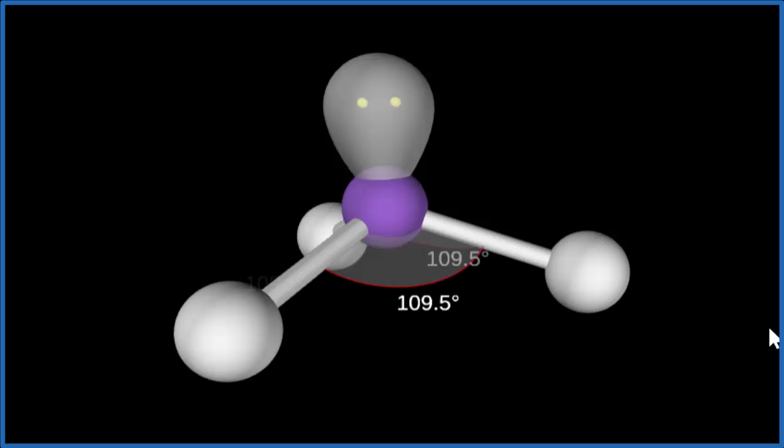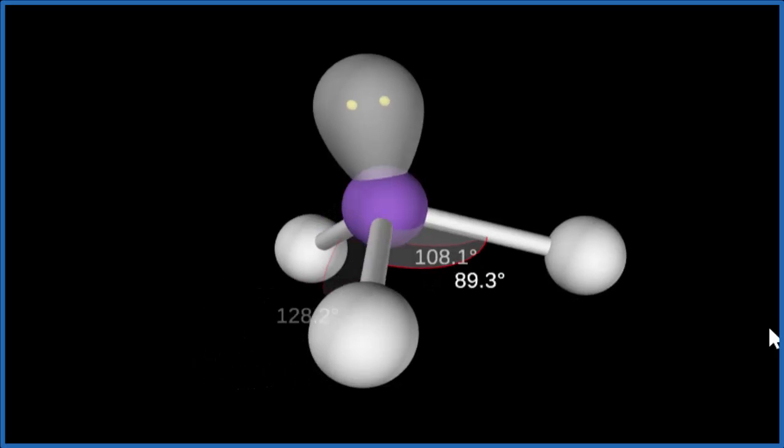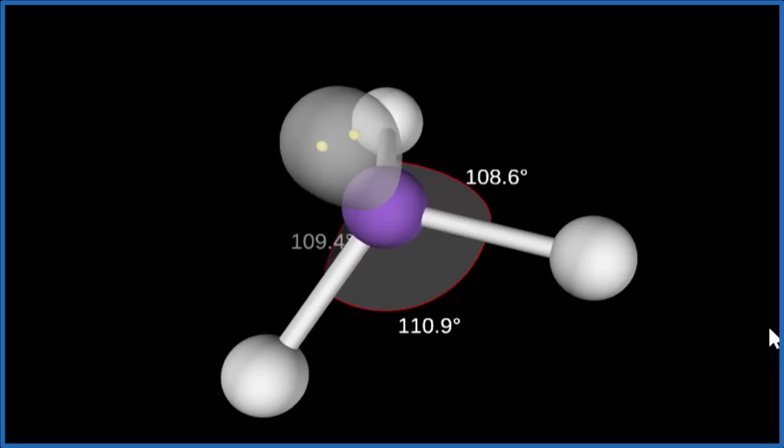The ideal bond angle again is 109.5. For ammonia, the bond angle turns out to be 107. Right about 107. Let's go back.